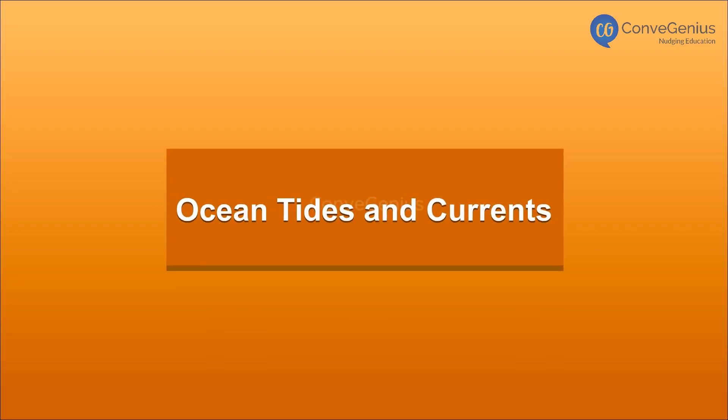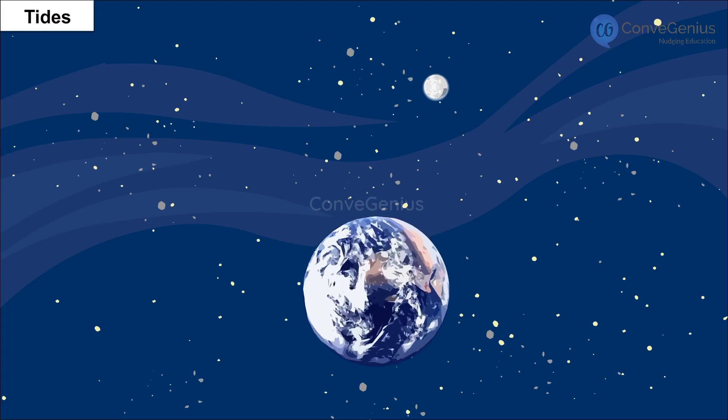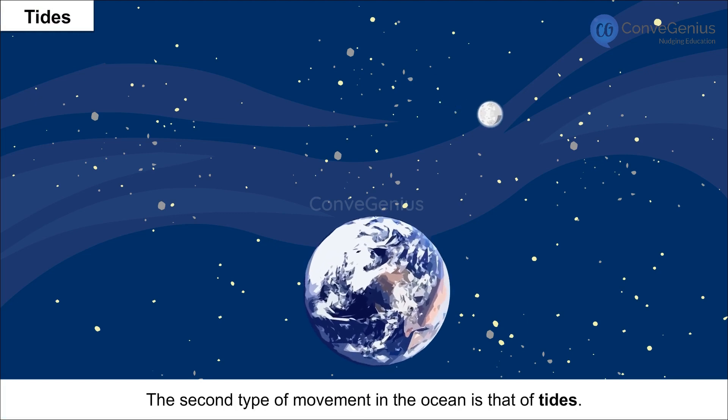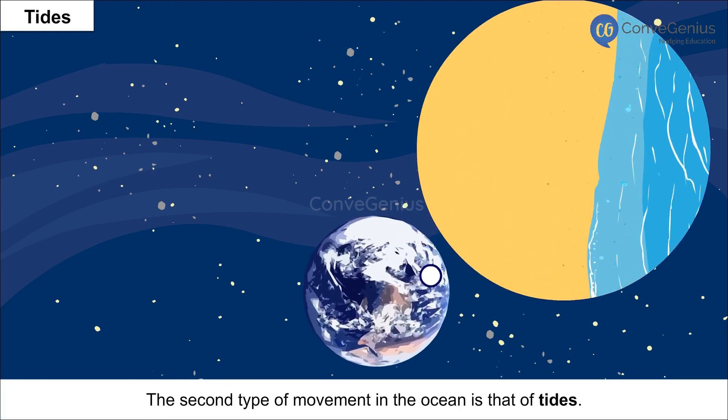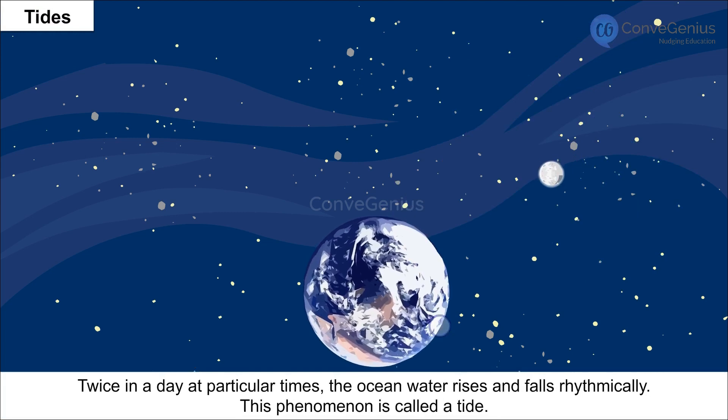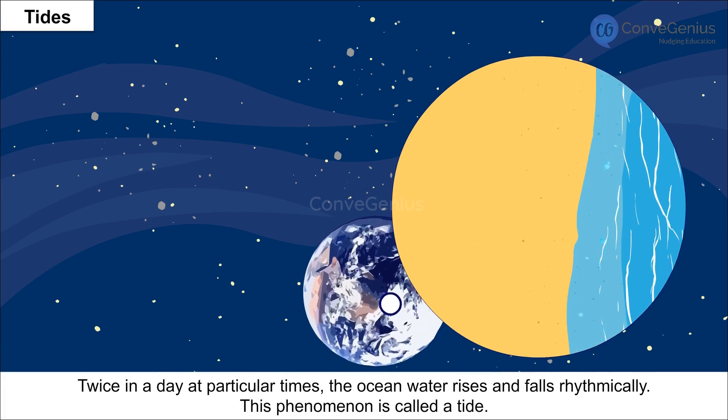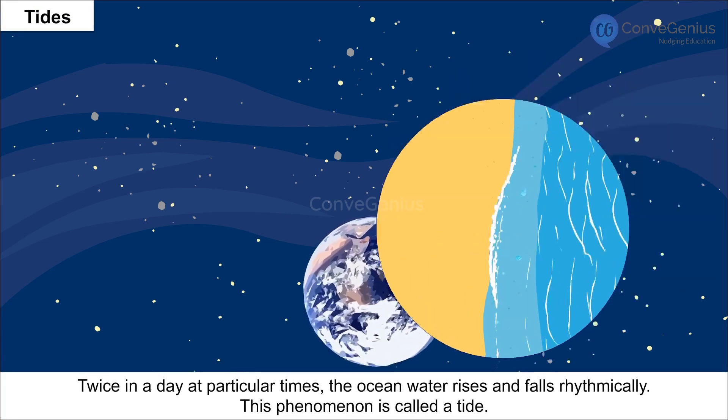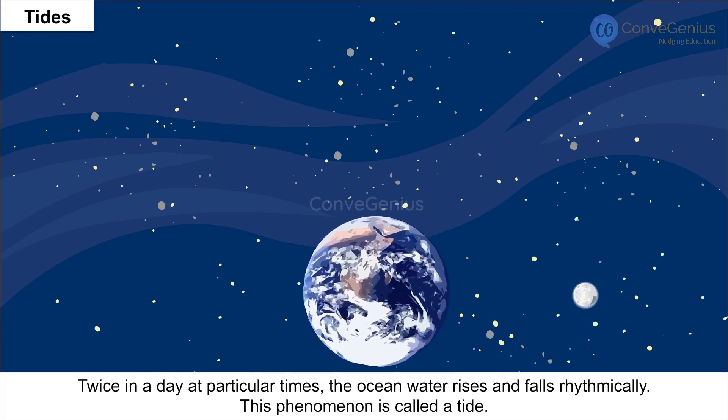Ocean Tides and Currents. Tides: The second type of movement in the ocean is that of tides. Twice in a day at particular times, the ocean water rises and falls rhythmically. This phenomenon is called a tide.